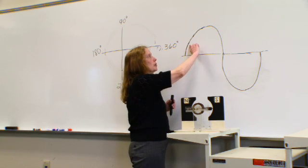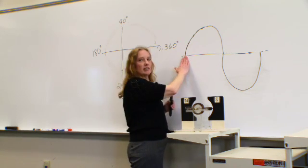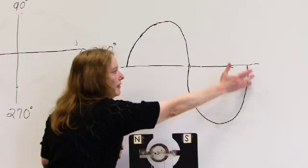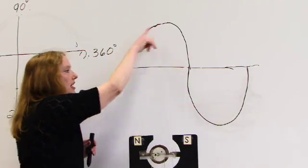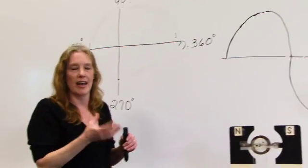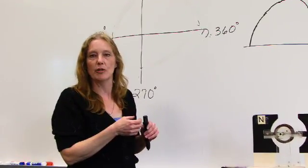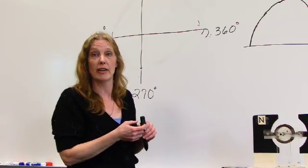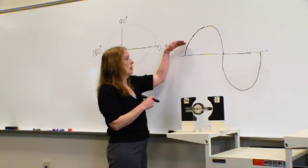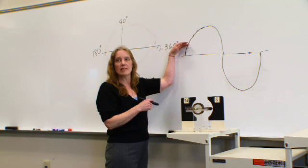So as we go through our sine wave starting at that zero degree, up to 90, back to 180, down to 270, back to 360, at each point along the sine wave is actually an instantaneous value of voltage or an instantaneous value of current. So at each point along the sine wave, each of these points is considered a degree.